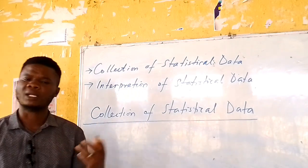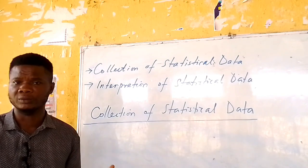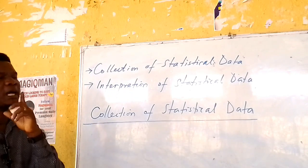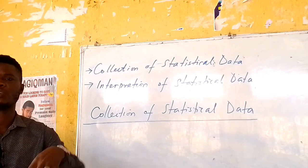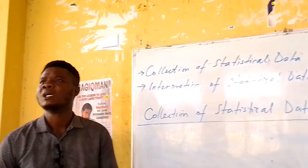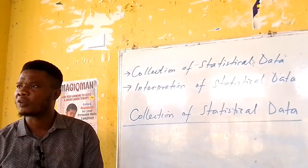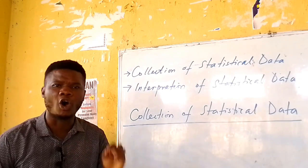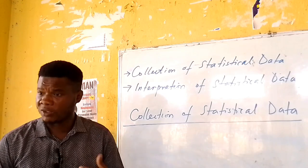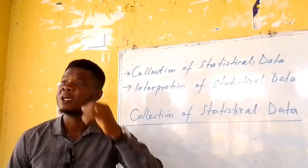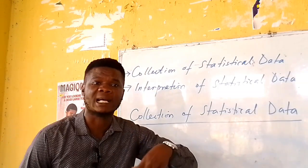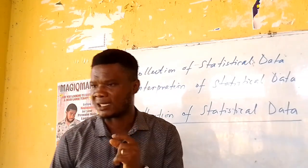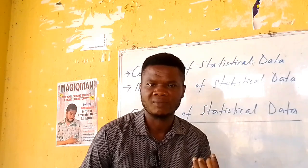Do you remember that in the last class, we said that we collect statistical data from a place called a field? And any data obtained directly from the field is considered as being raw. By raw, we mean that data is unprocessed — or unorganized. That's why we discussed the definition of statistics as an embodiment of four processes that are sequential in nature.